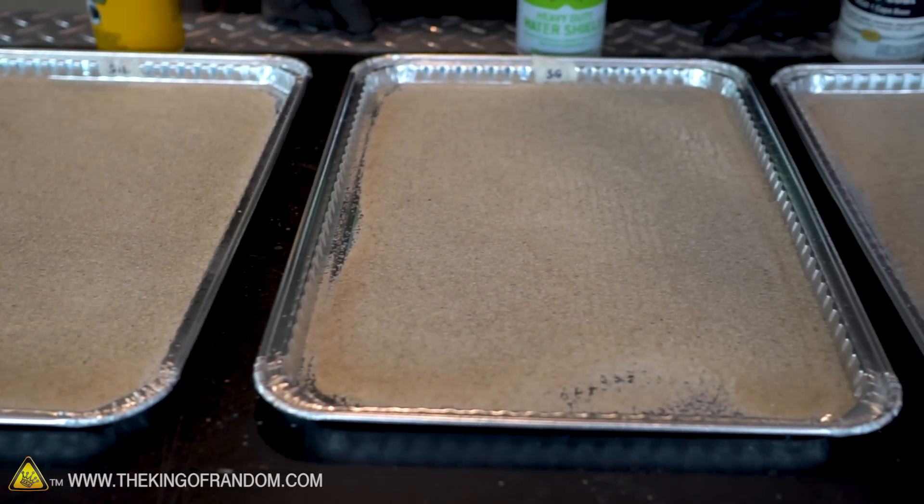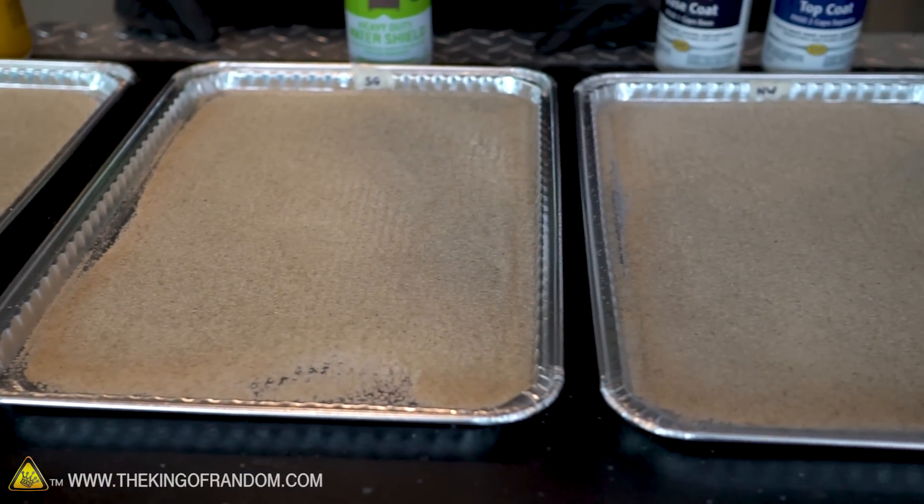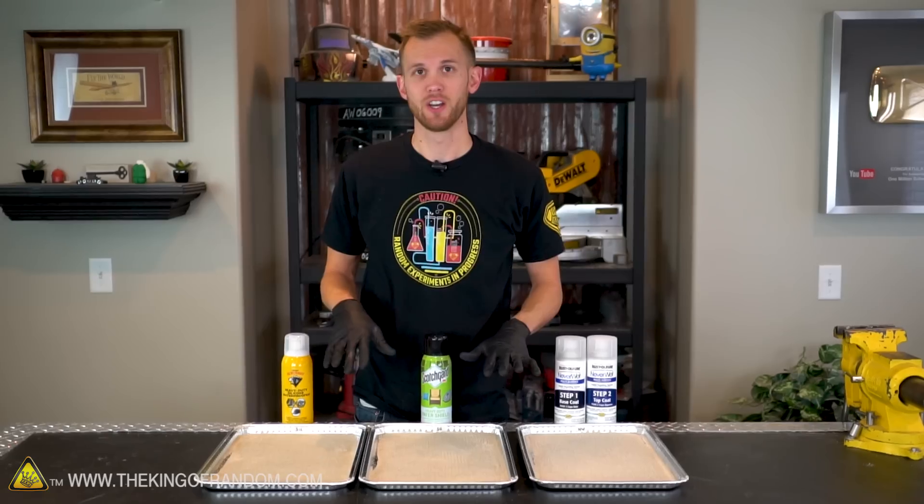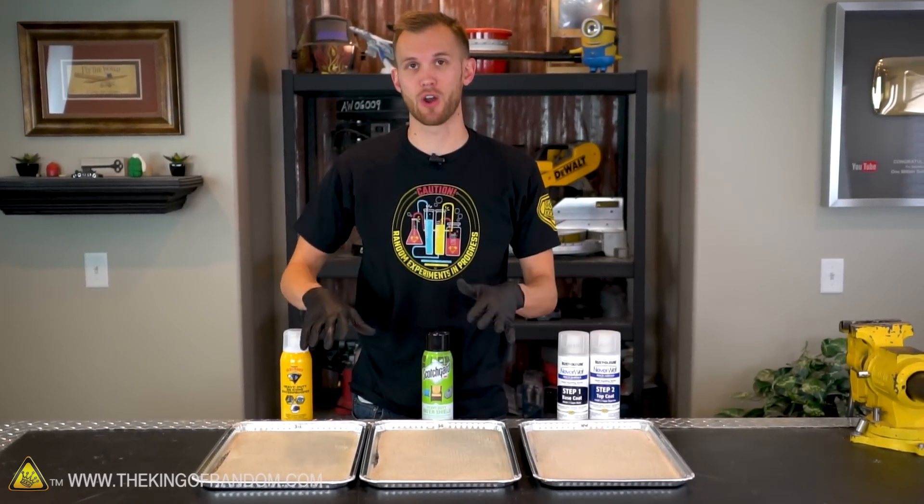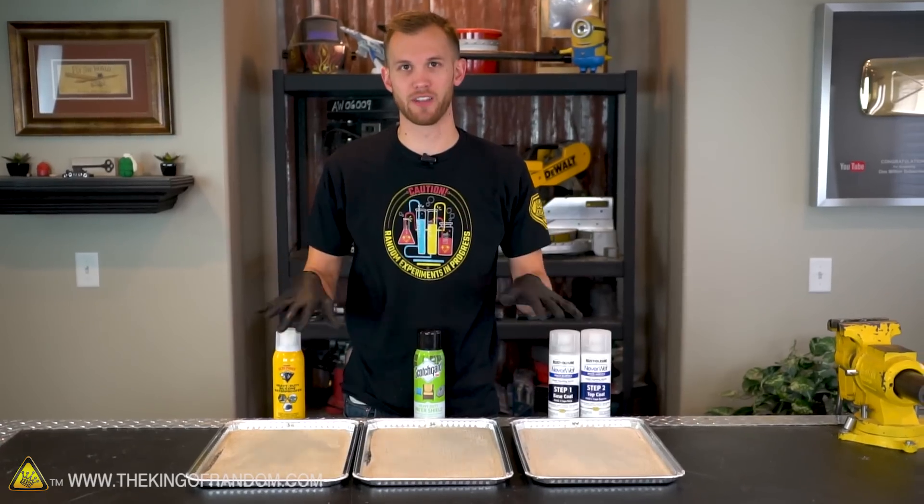There we go, we've got one side of our sand sprayed with each of our different types of waterproofing and it's mostly dry at this point. So what I want to do is stir it up and then flatten it out again and spray on a new coat to try and make sure that we have all of the different edges of our sand nicely coated.